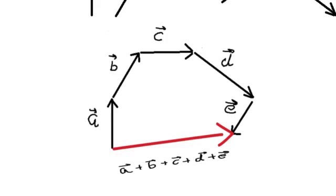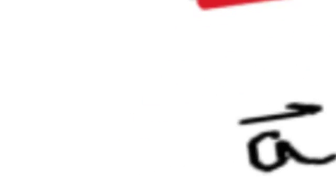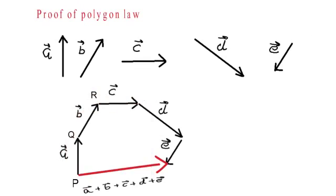Thus we form a polygon, and we have seen that the sum of A vector, B vector, C vector, D vector, and E vector will be the line joining the tail of A with the head of E. This will be the vector A + B + C + D + E. Now we name this polygon with vertices P, Q, R, S, T, and U.